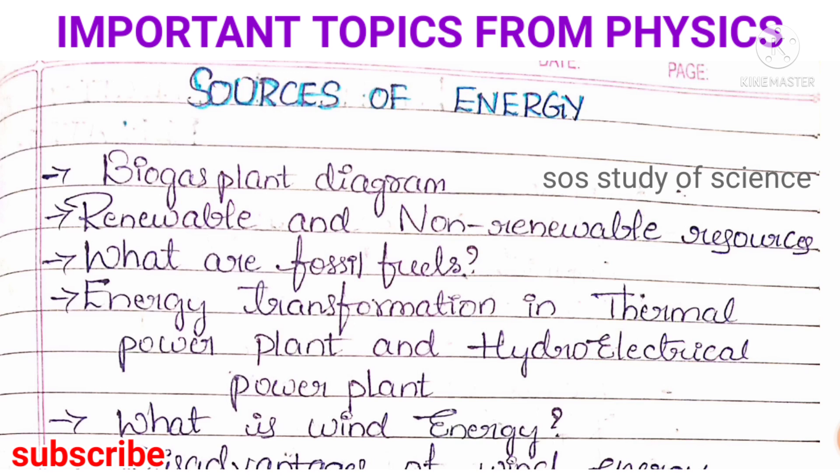In this video I am discussing the physics part. For your physics part, totally 28 marks is allotted out of 80 marks. Totally 4 lessons you have to study in physics, because the 5th lesson, Human Eye and a Colorful World, is deleted for the 2022 board examination.